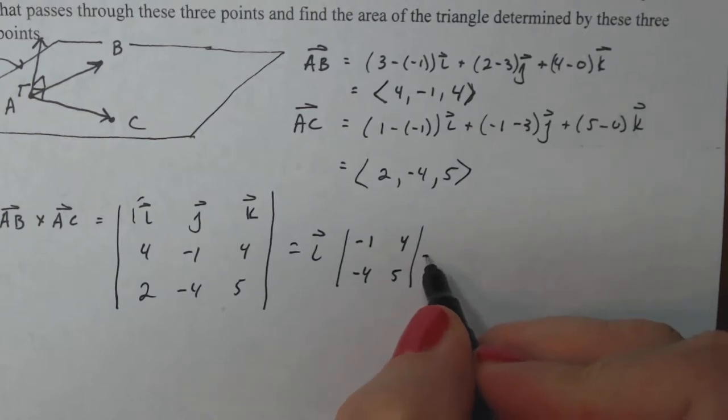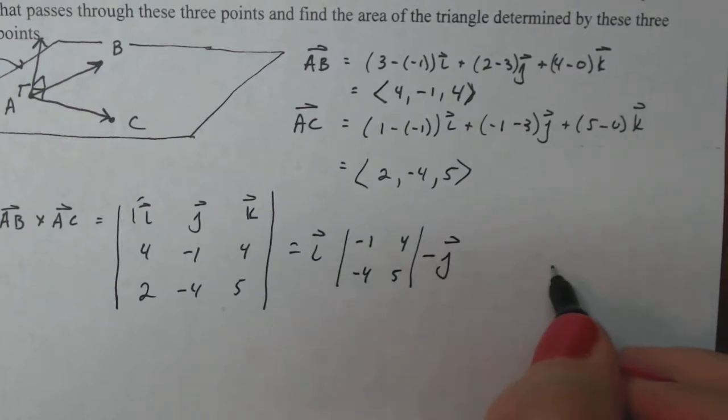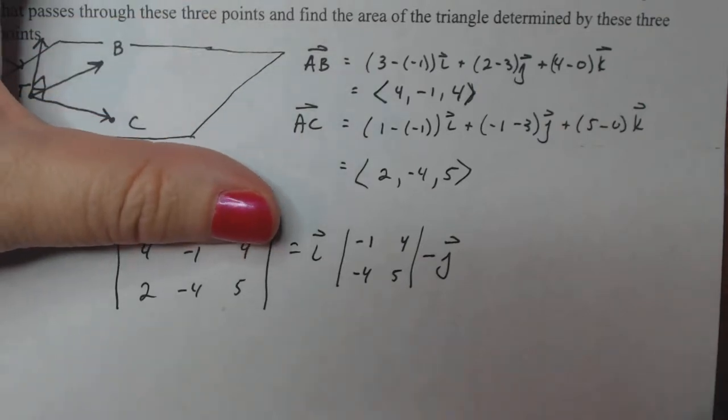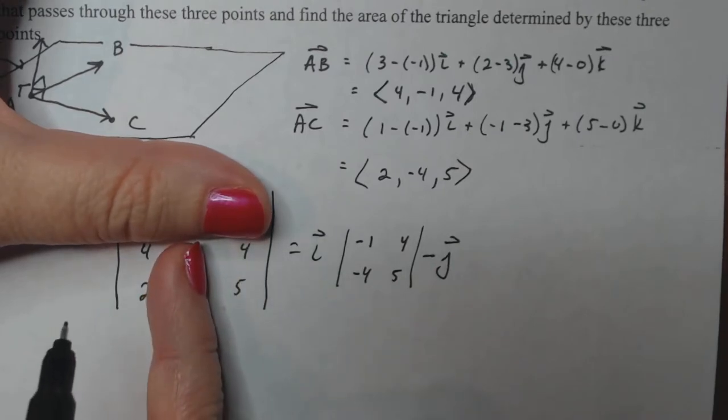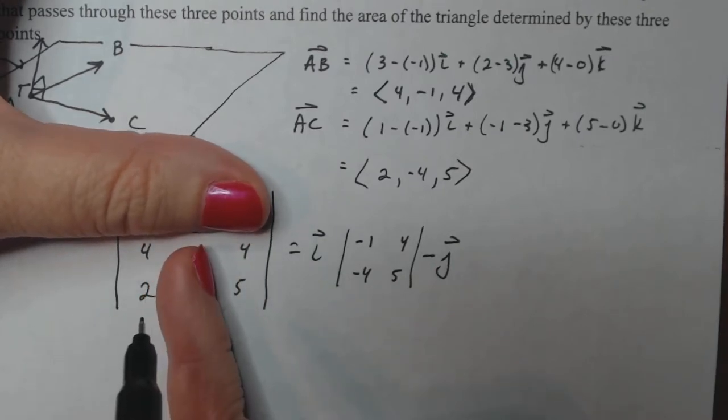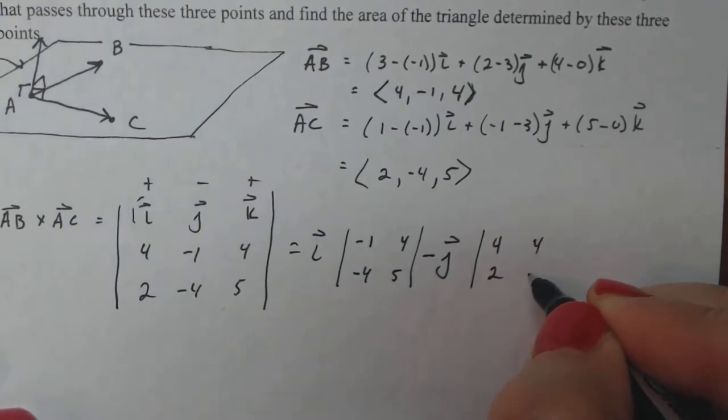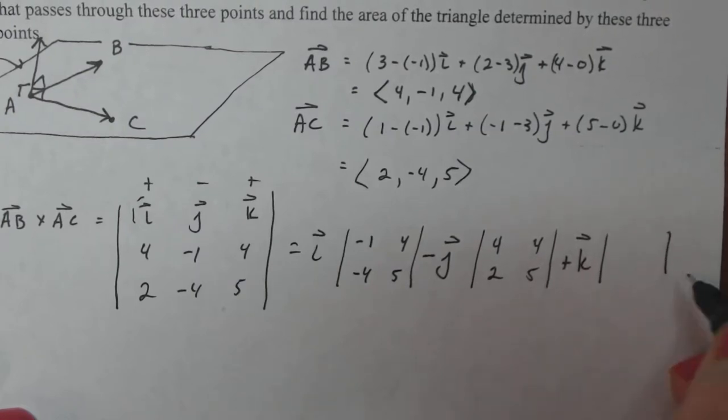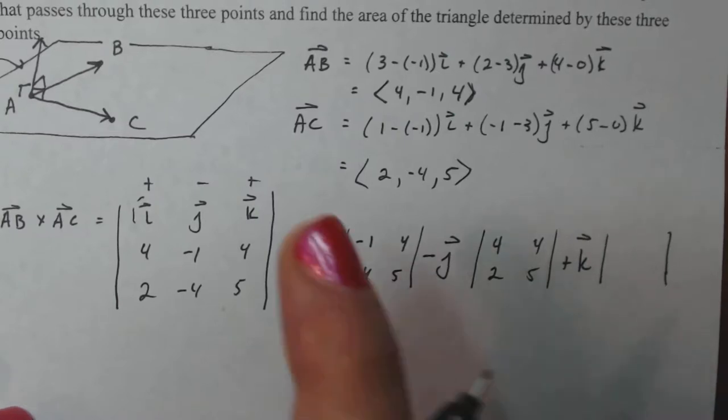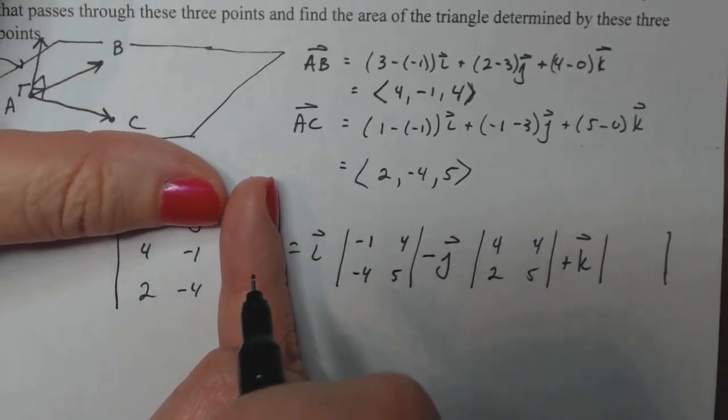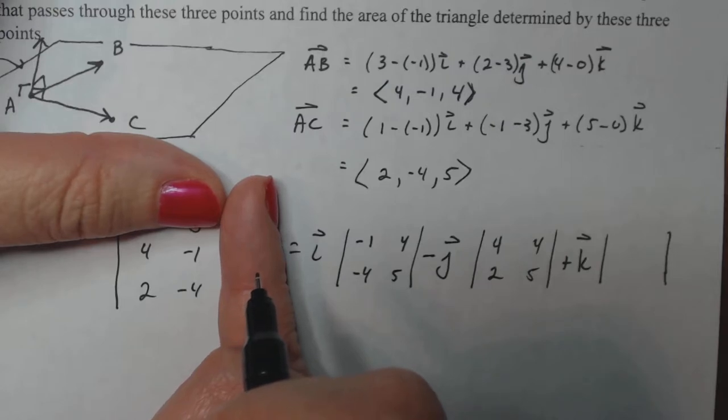Then it's always minus j. So plus, minus, plus, plus, minus, plus. Now that's a linear algebra thing. If you have linear algebra, you'll know why it changes sign. But right now just trust it. So I take out the first row and the middle column where j is. And that's the determinant I want to find next, 4, 2, 4, 5. And then add k times its determinant. So I want to take off this row or this column in that row. And that's the determinant 4 minus 1, 2 minus 4.